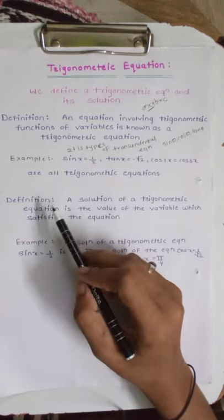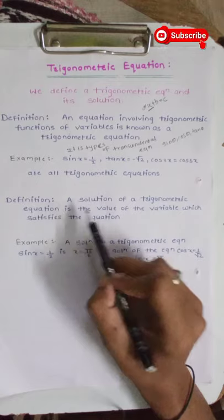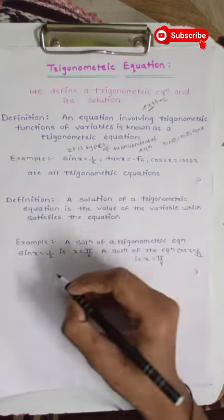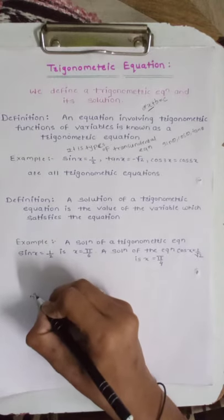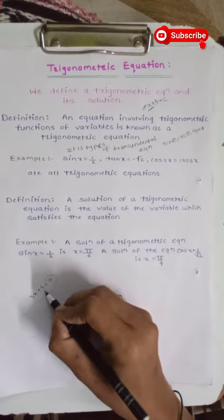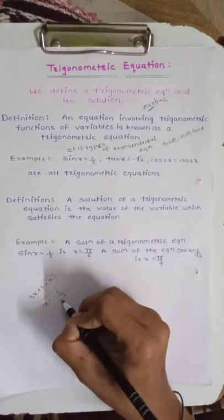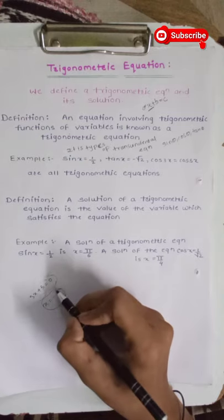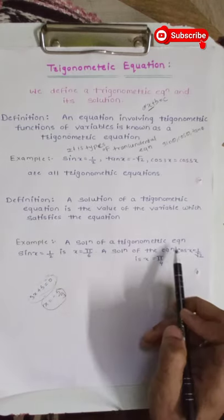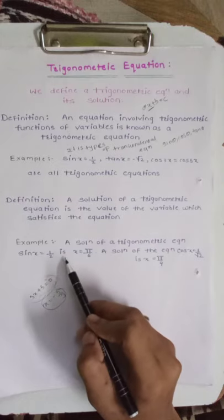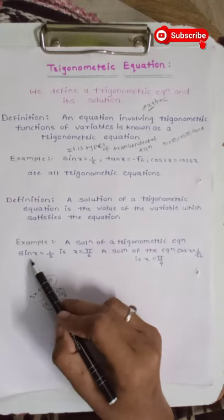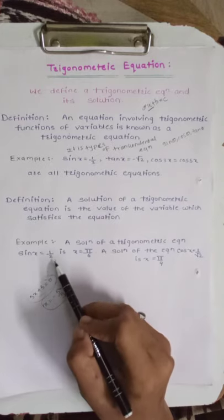The second definition is the solution of a trigonometric equation. A solution of a trigonometric equation is the value of the variable which satisfies the equation. For example, consider the algebraic equation 3x plus 5 is equal to 0. The solution is x is equal to minus 5 by 3. This solution satisfies the equation. Similarly, a solution of the trigonometric equation sin x is equal to 1 by 2 is x is equal to pi by 6, since putting pi by 6 gives the value 1 by 2.